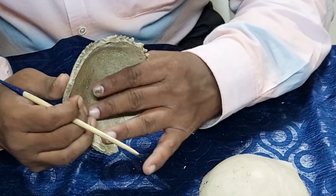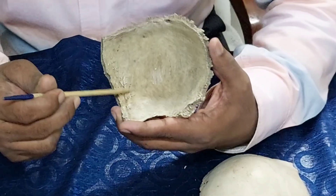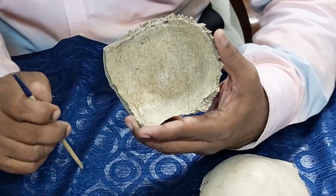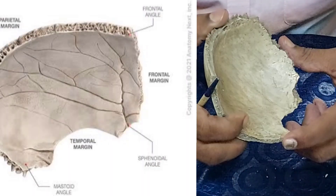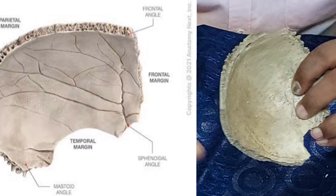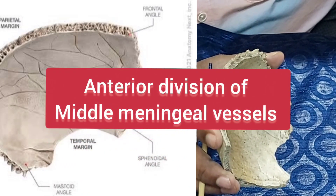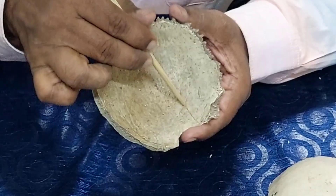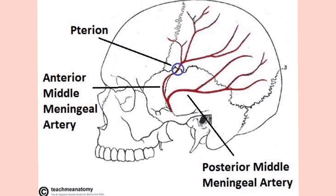The internal surface is concave. Here you will see impressions for the cerebral gyri, granular foveae for the arachnoid granulations, and a groove close to the antero-inferior angle running upwards and backwards. This groove is for the anterior division of the middle meningeal vessels. Another groove from the posterior part is for the posterior meningeal vessels. The meningeal vessels are extradural; both the artery and veins are extradural.